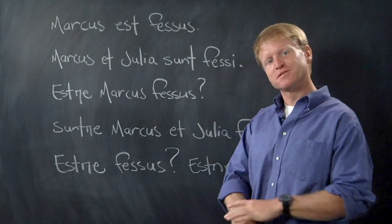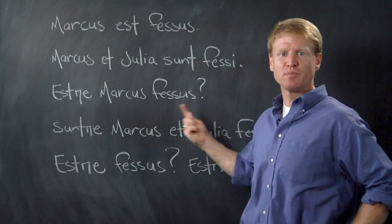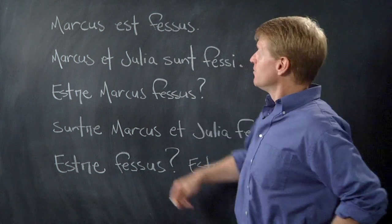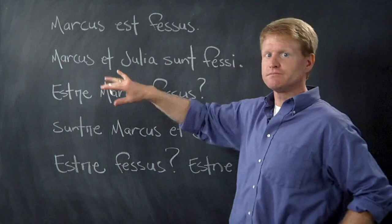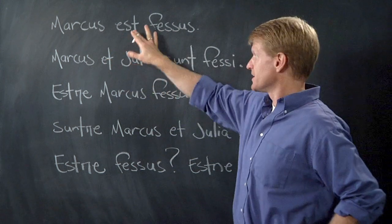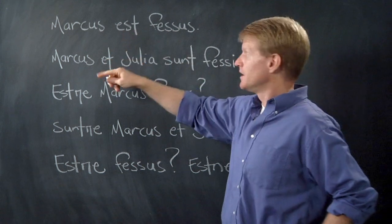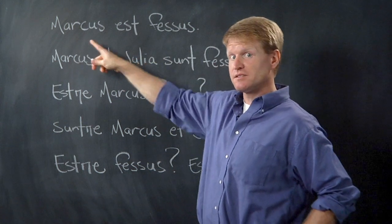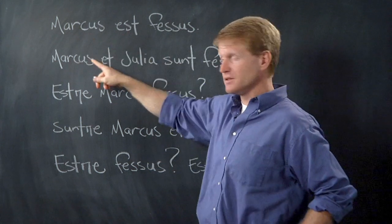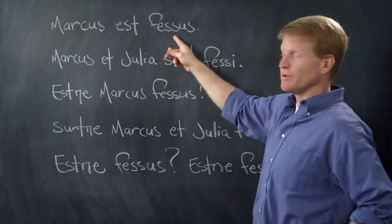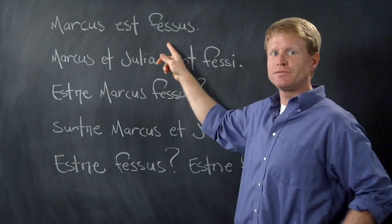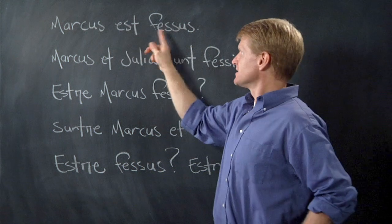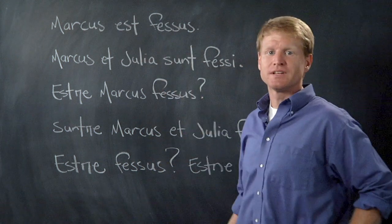We're back. Here are some more sentences — we're going to change it up a little bit. I'm going to add some plural this time. Marcus est fessus. There's est again — it means 'is.' Notice we only have one subject: Marcus. Marcus est fessus — Marcus is tired.